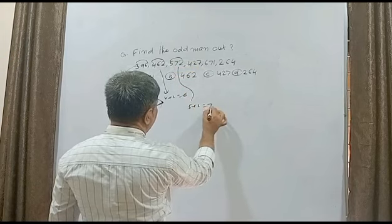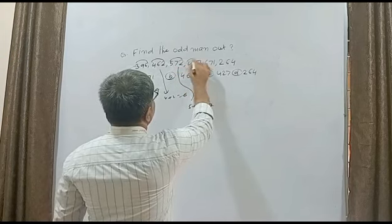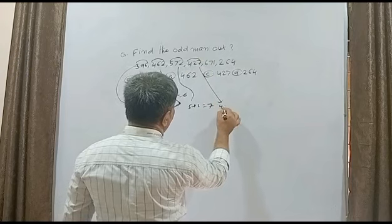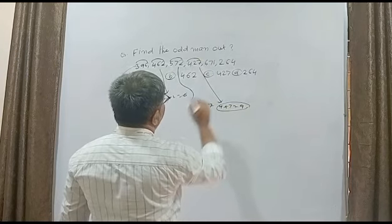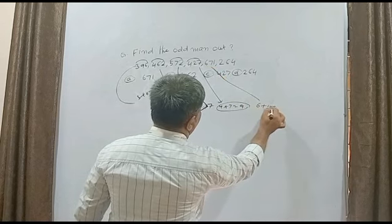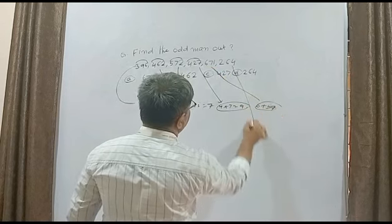Again, this number 5 plus 2 is what? Seven. But here, when we are adding 4 plus 7 is what? Nine, but it's not equal to 2. Here again, 6 plus 1 is what? Seven.